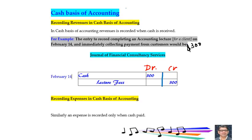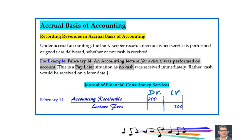In cash basis of accounting, cash is received on the 14th of February, therefore on 14th of February cash is debited and lecture fee, which is a revenue, is credited. So revenues are recorded when cash is received. Similarly, expenses are recorded when cash is paid.